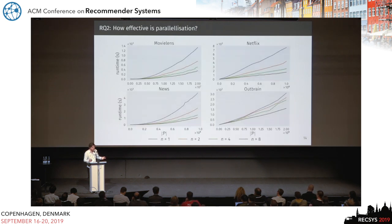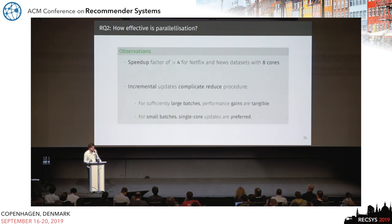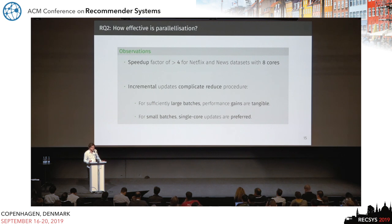With multiple cores, the approach also scales pretty well. We have results for one, two, four, and eight cores. It's not exactly linear — as you add more cores, you see smaller gains. But for the news and Netflix datasets, we actually achieve a speedup factor of more than four compared to the single-core number. It is worth mentioning that if you do this in parallel and also want to use the online computation property, you have to think about the batch size, because if your batch size is very, very small, there is overhead in the MapReduce procedure that will actually make it worse.